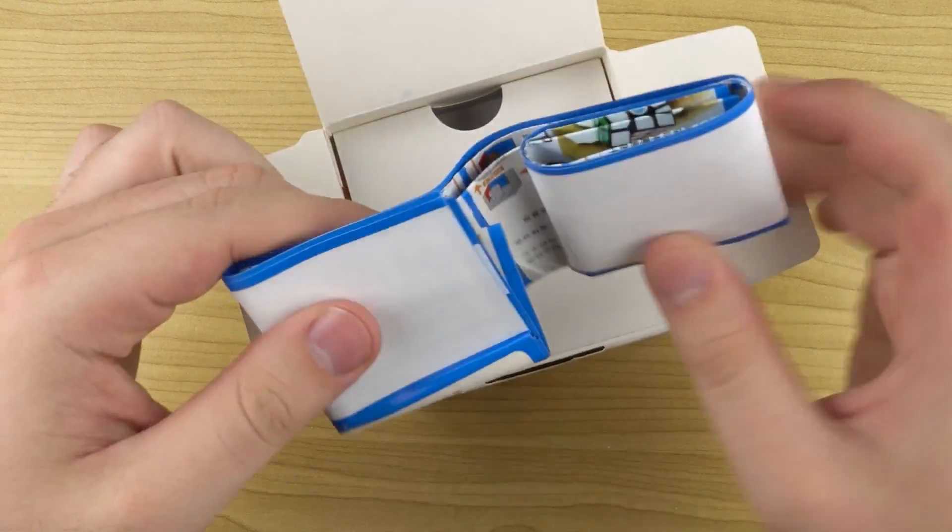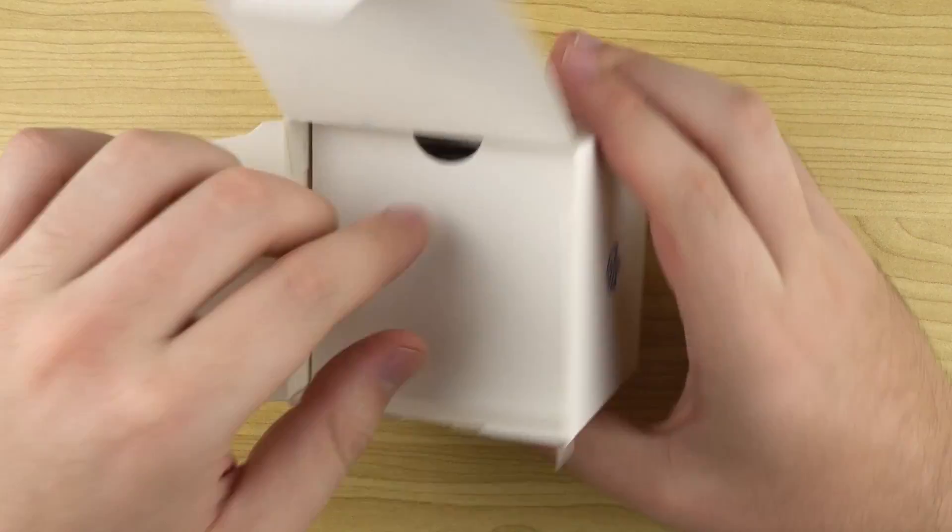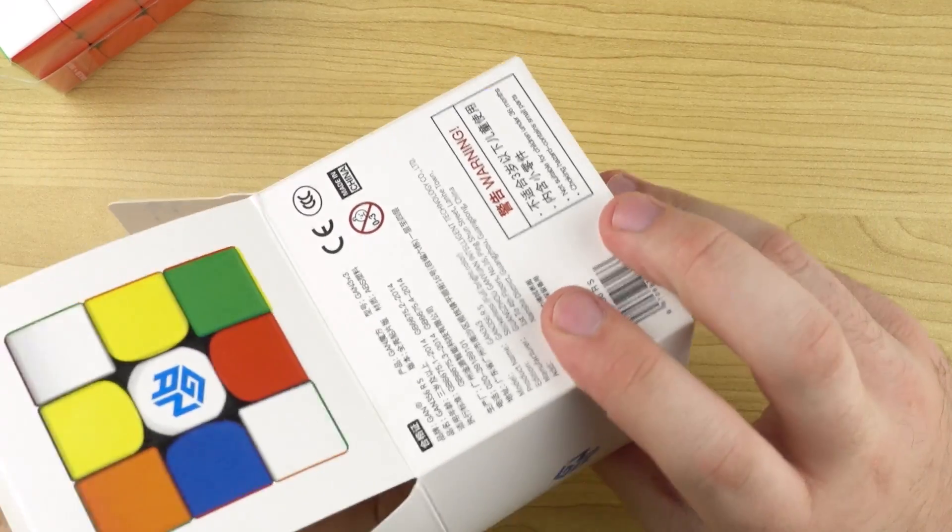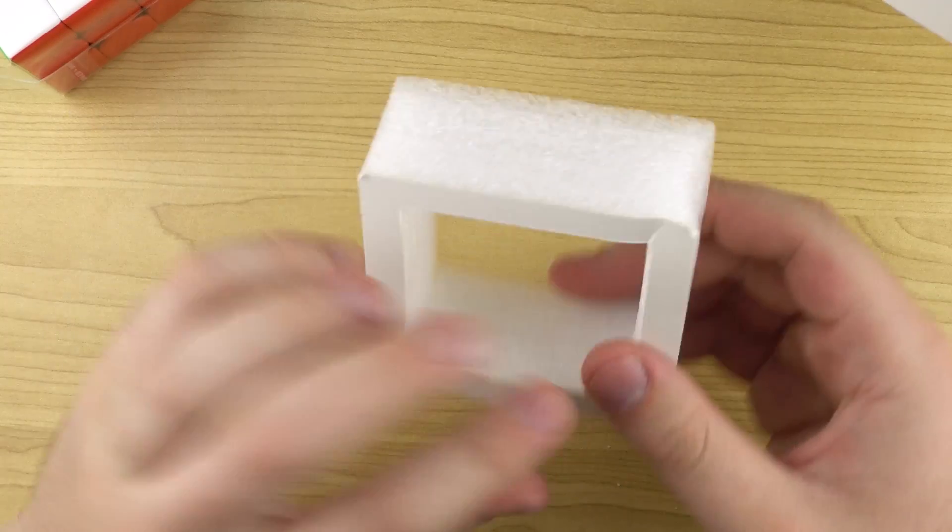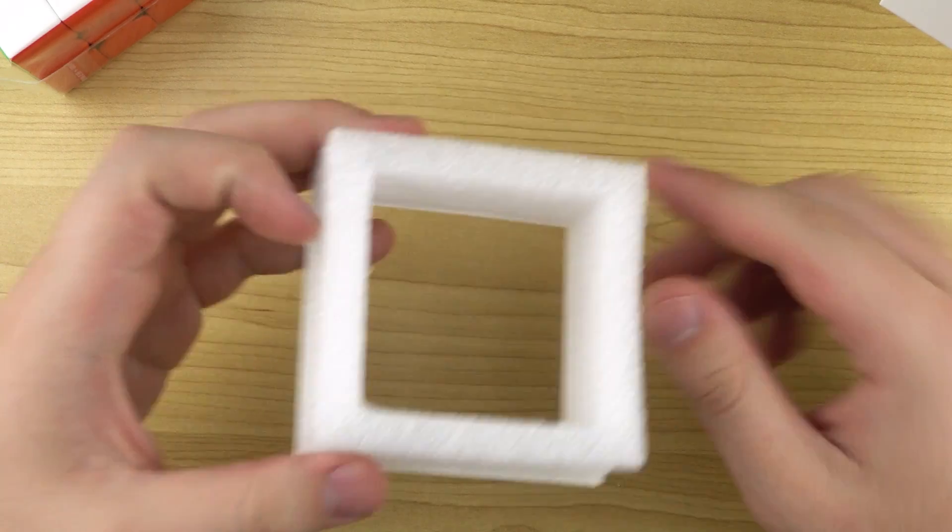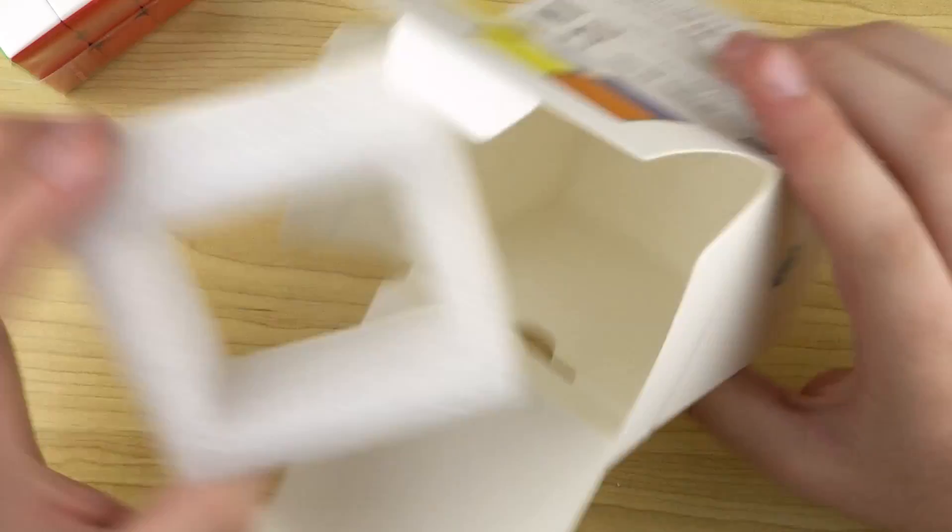First off we have a CFOP pamphlet, which is always good. And we have the cube, and that's interesting—there's actually some foam in the box. I don't think I've actually seen foam ever in a GAN box, but that's about it.